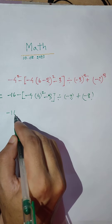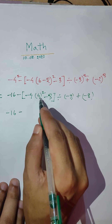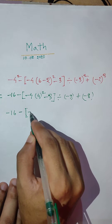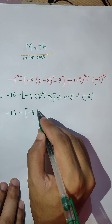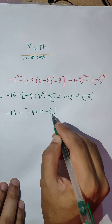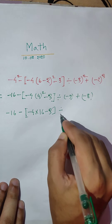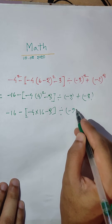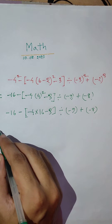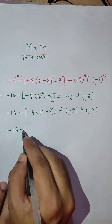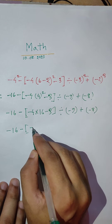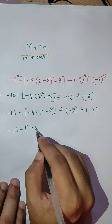Then minus 60. Minus 4. 4 into 4 into 4 equals 16. Minus 3, bracket, divide 9. Minus 8, minus 8. Then 60. 4 into 16. Minus 64.